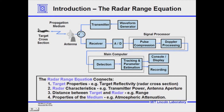That radar equation connects the target properties — the target's reflectivity, or its radar cross-section as we call it — the radar characteristics, such as transmitter power and antenna aperture, the distance between the target and the radar (i.e., the range to the target), and also the properties of the medium, such as atmospheric attenuation.